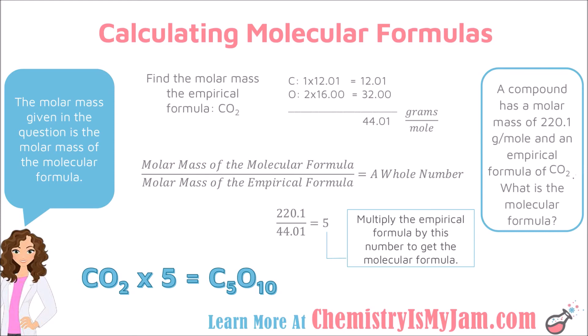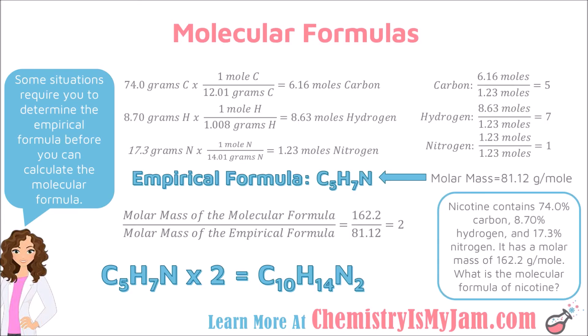That example was one of the kinder ones because the empirical formula was given. Next, we are going to look at an example where we have to calculate the empirical formula and then calculate the molecular formula. Nicotine contains 74.0% carbon, 8.70% hydrogen, and 17.3% nitrogen, and has a molar mass of 162.2 grams per mole. What is the molecular formula for nicotine?